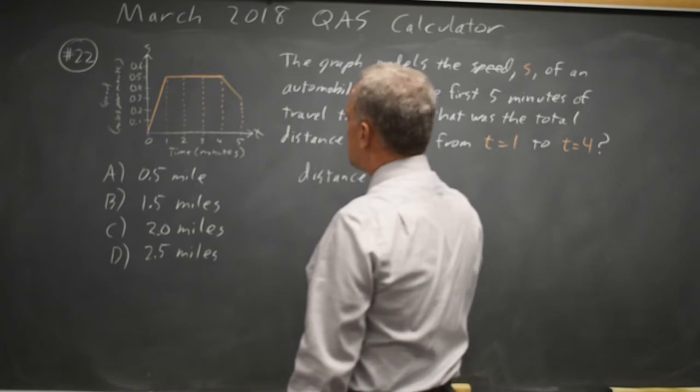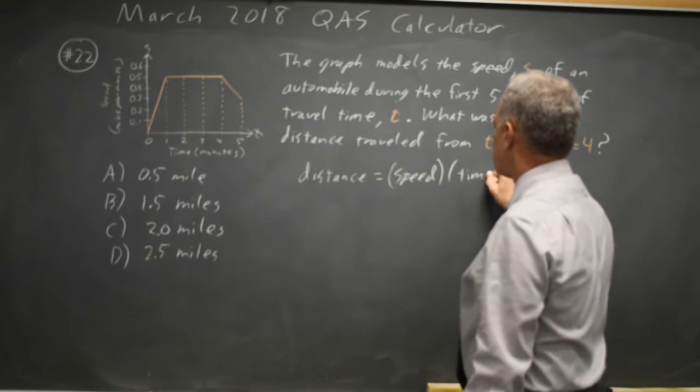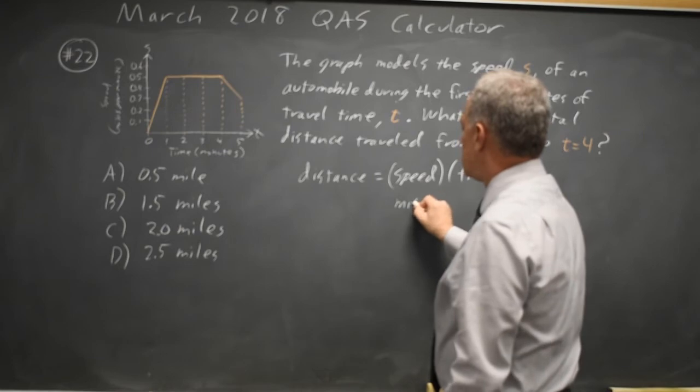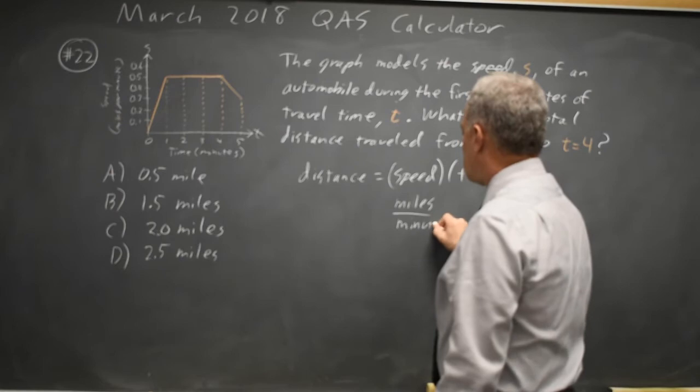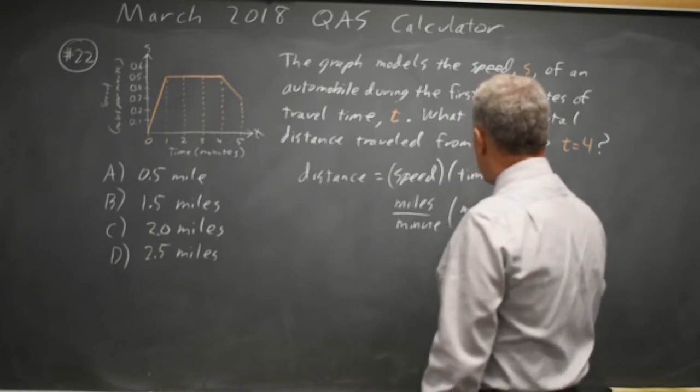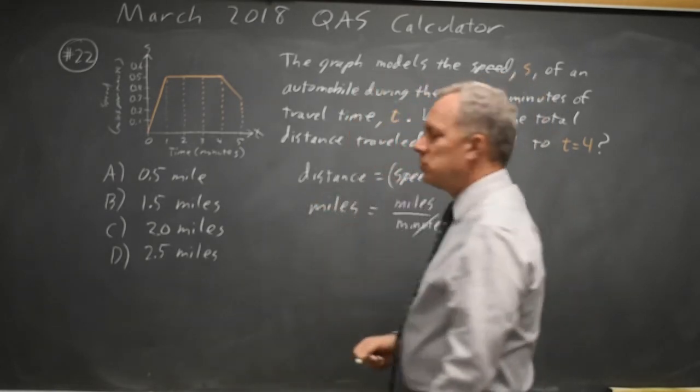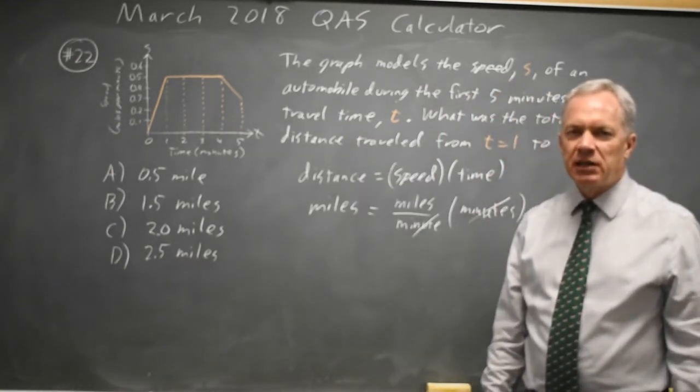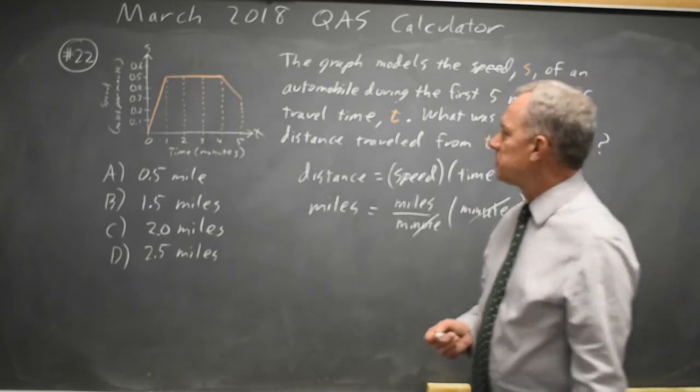Distance is equal to speed times time and the units there should make sense. If speed is in miles per minute and we multiply that by minutes, the minutes cancel and we're left with miles. So in terms of units, it makes sense to multiply speed by time to get distance. You should either be familiar with this formula or check the units to make sure you're doing it correctly.